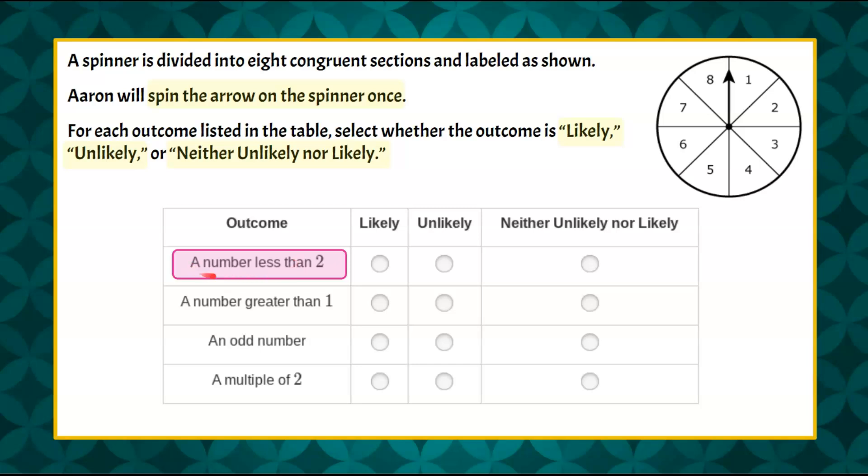So let's begin by looking at our first expected outcome. We're asked about a number less than two when we spin our spinner once. So when we look at that, we can identify on our spinner that we have one of the eight sections that is a number less than two. So that means when we spin this spinner, we have a one in eight chance of getting a number less than two.